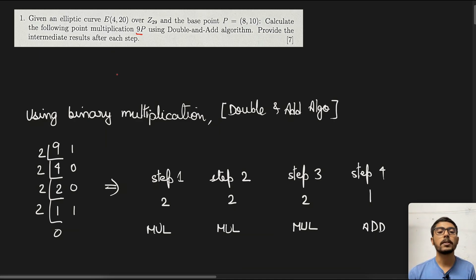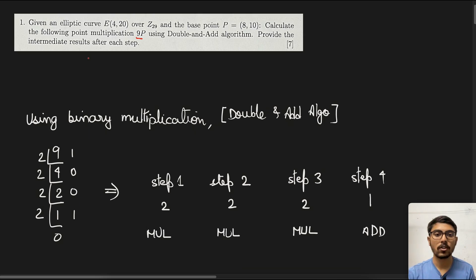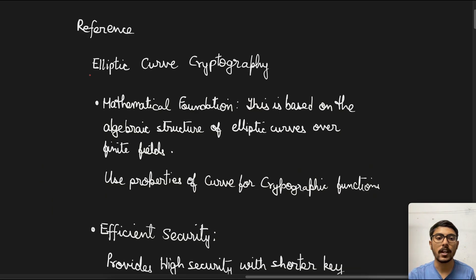There are many technical terms so we'll go through them one by one. For those of you who don't know what elliptic curve cryptography and the double and add algorithm are, from a theoretical side I'll first give a brief reference and then start the actual calculation. If you want to jump straight into the calculation, feel free to do so.